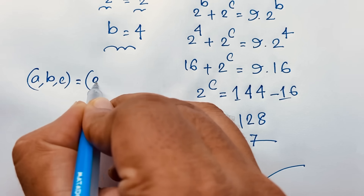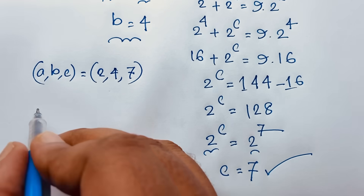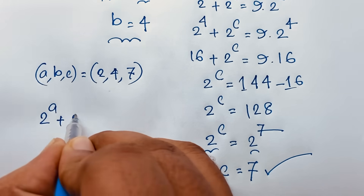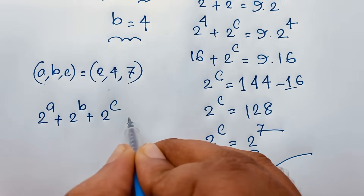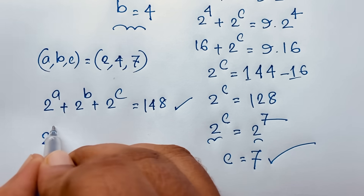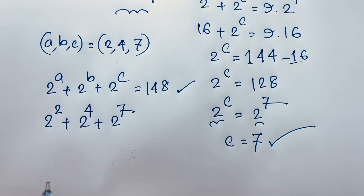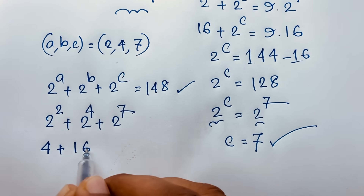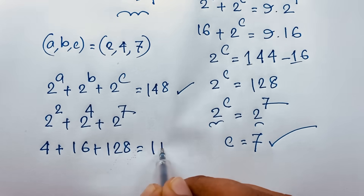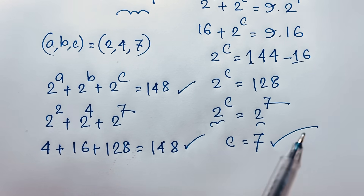Our final answer is a = 2, b = 4, c = 7. Let's verify: 2^2 + 2^4 + 2^7 = 4 + 16 + 128 = 148. Left-hand side equals right-hand side — correct! This is an interesting exponential Math Olympiad problem. Thank you all; if you enjoyed this, please subscribe to my channel for more interesting videos. Goodbye, take care.